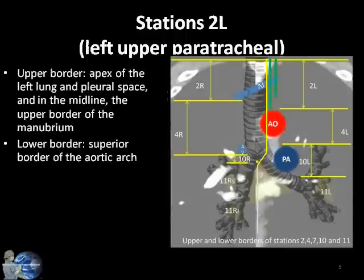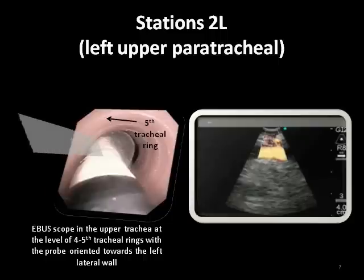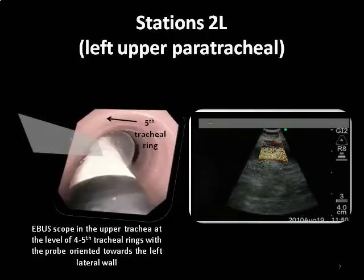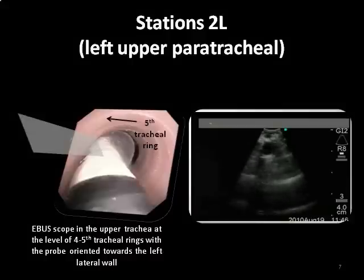Station 2L, the upper left paratracheal region, includes nodes extending to the left of the left lateral border of the trachea. The upper border is the apex of the left lung and pleural space, and in the midline, the upper border of the sternal manubrium. The lower border is the superior aspect of the aortic arch. To visualize this station, the scope is placed against the left tracheal wall in the upper trachea at the level of the 4th to 5th tracheal rings, with the transducer oriented towards the 9 o'clock position. The left carotid artery is seen next to the airway, and slightly more anterior, the main innominate vein is seen. Just above it, a small lymph node is visualized.